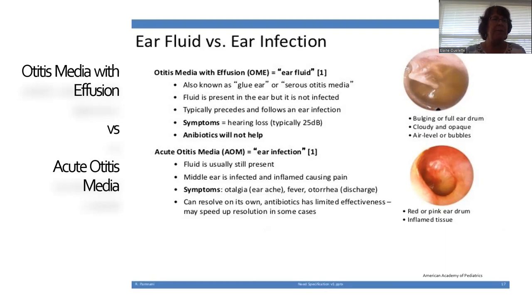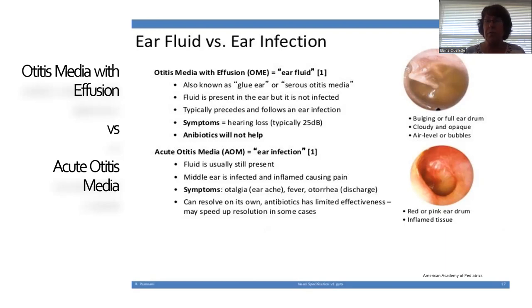What does an ear infection look like? Acute otitis media is associated with bulging, opaqueness of the eardrum, and erythema. The eardrum is red and inflamed, the tissue will be pink or red, and there usually is fluid behind the eardrum. There's pain, sometimes fever, sometimes discharge. It often resolves on its own with Tylenol for pain until the body heals it.